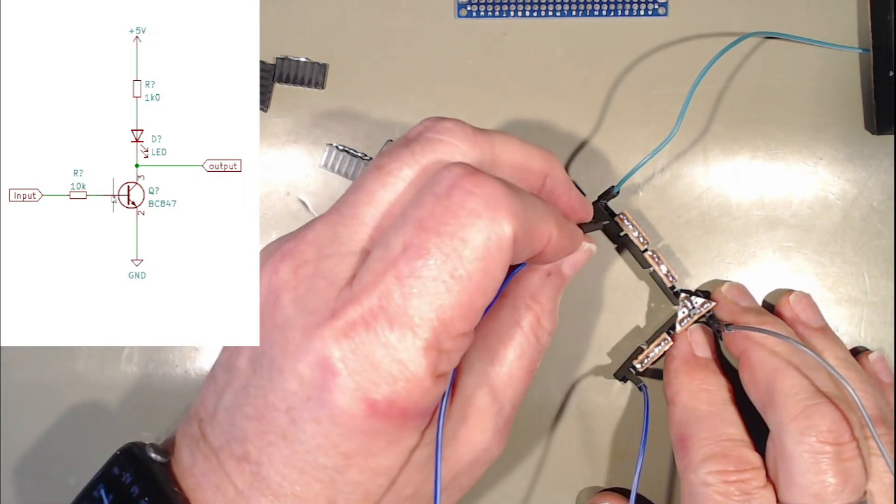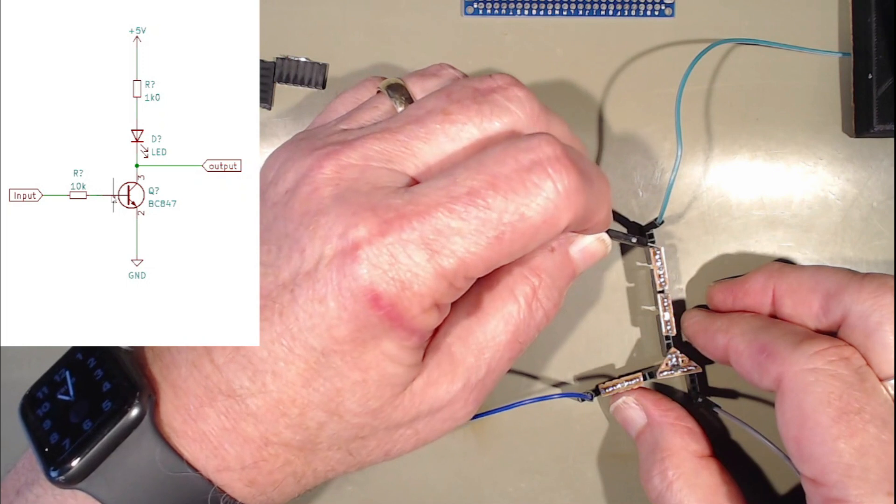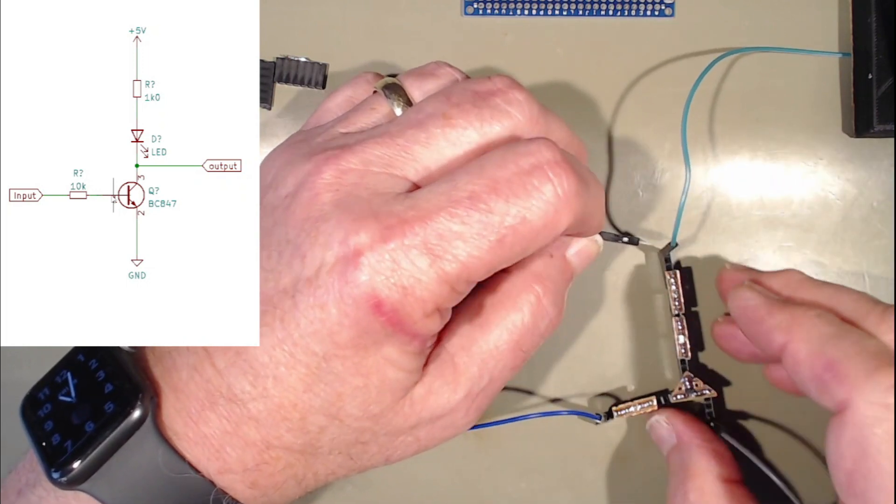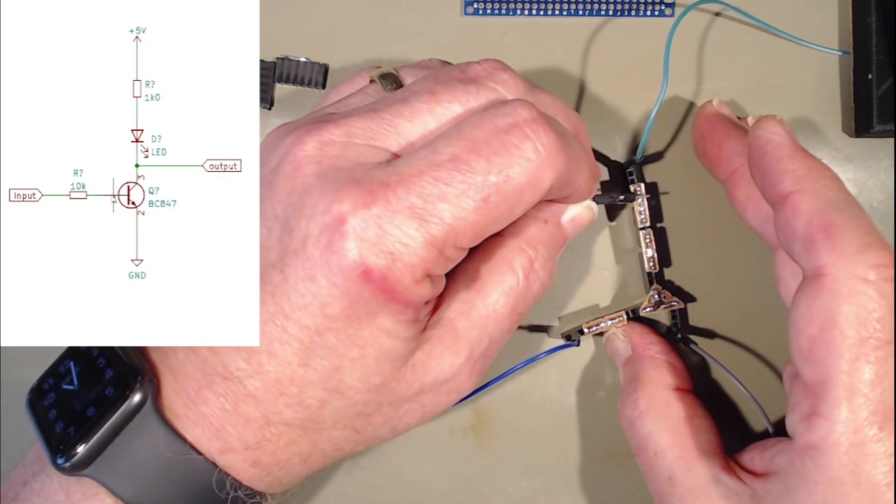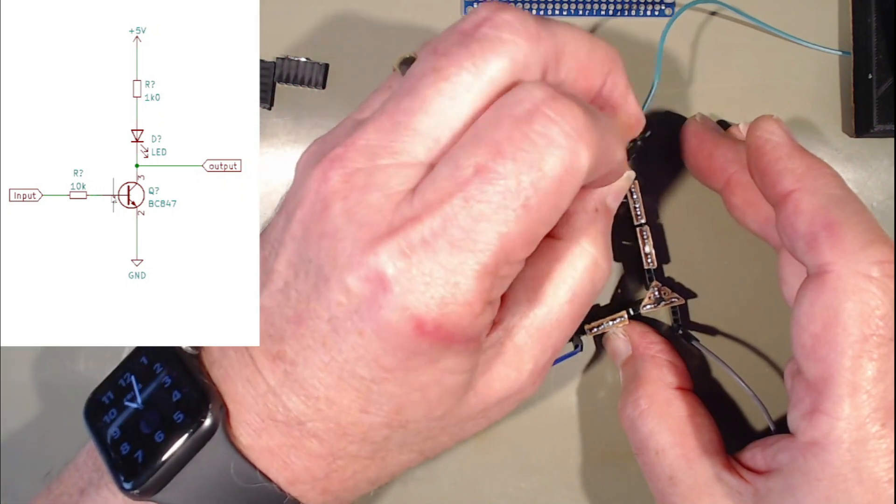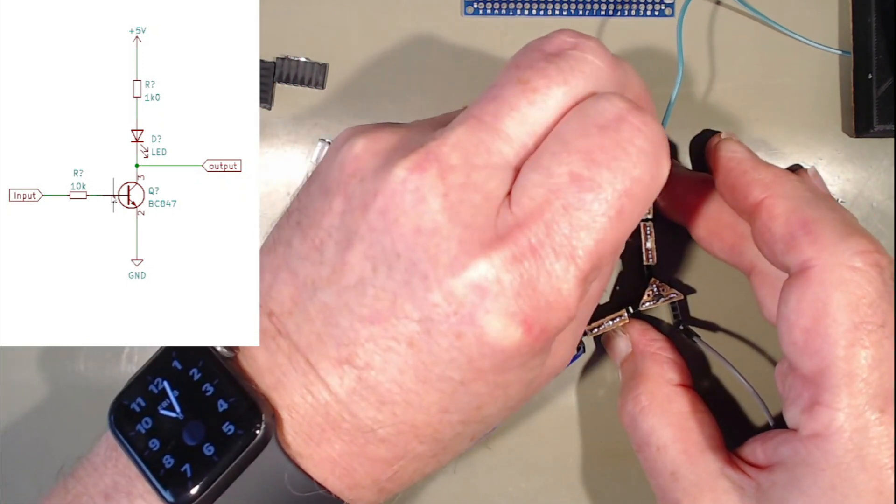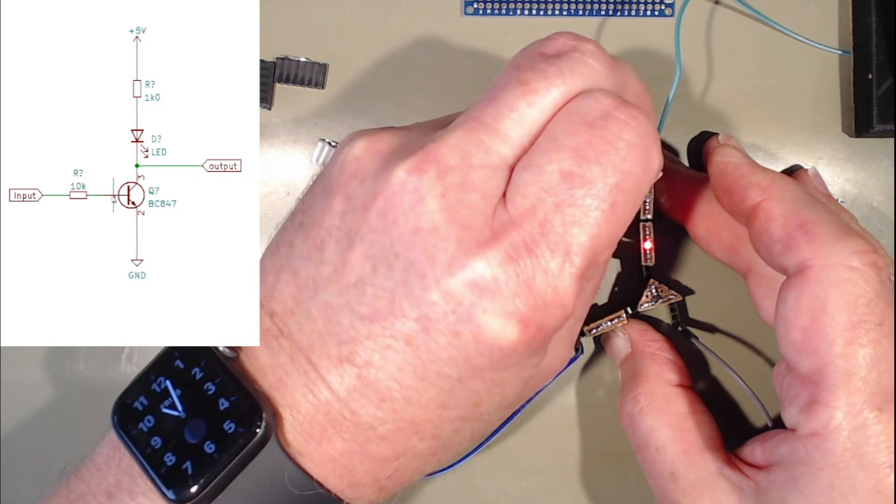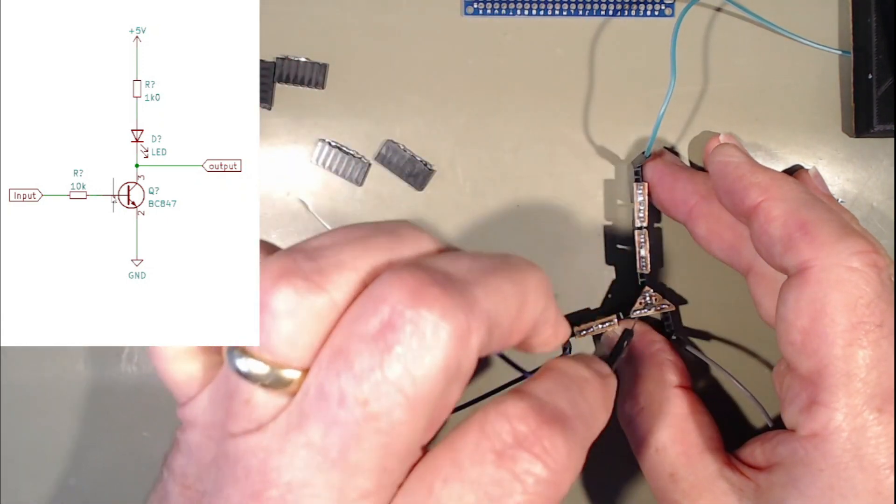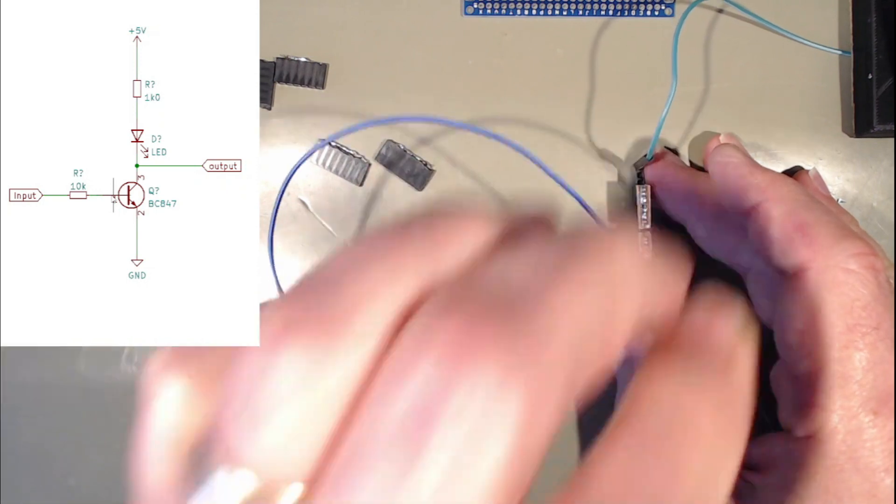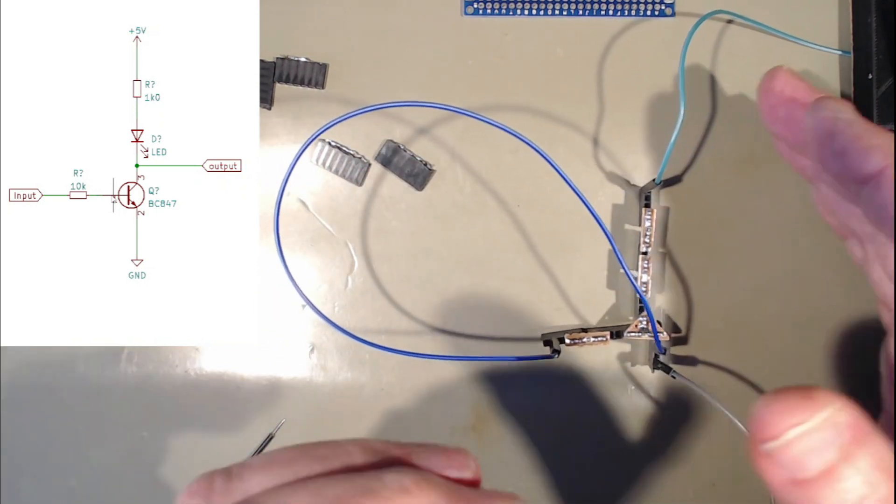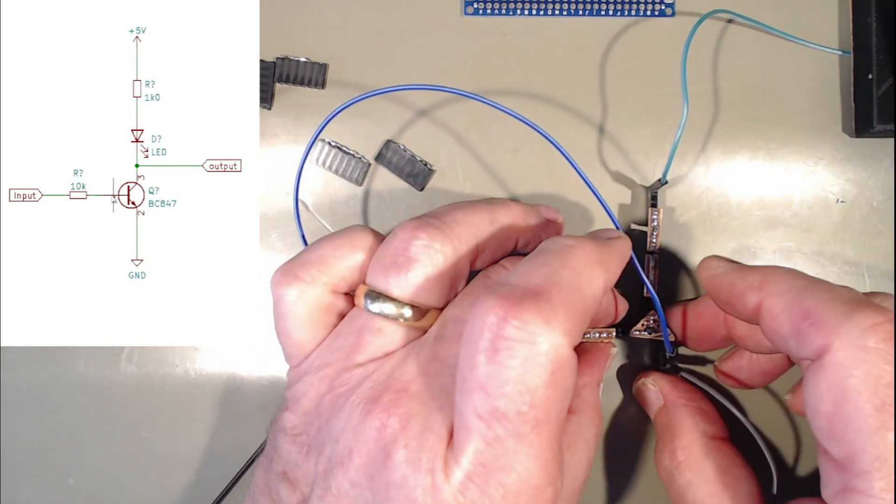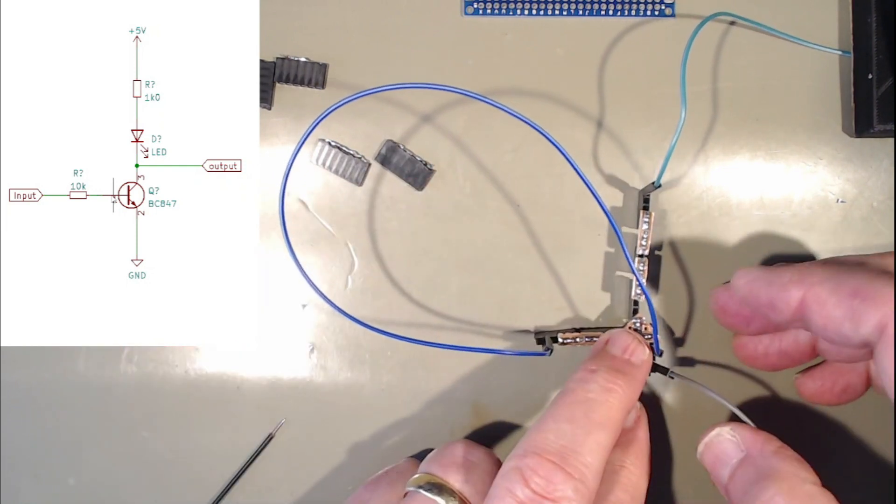Now when we connect this to high, can I see? High on, low is off. I'm sorry about my lighting in here, but there we go.